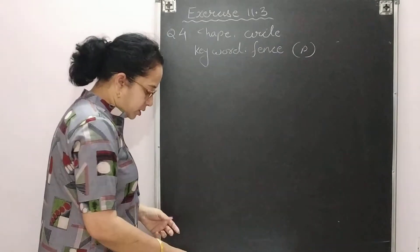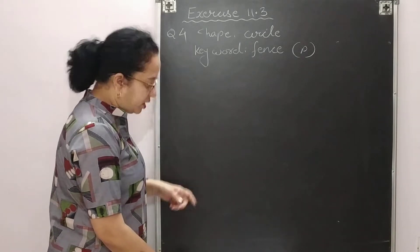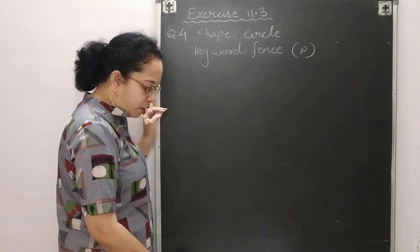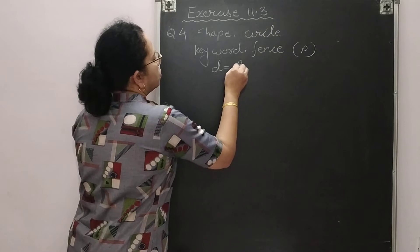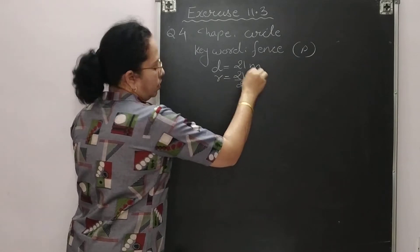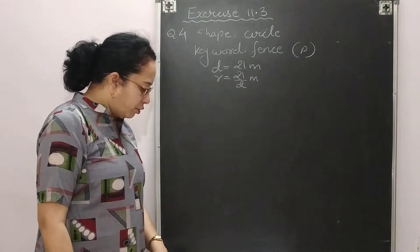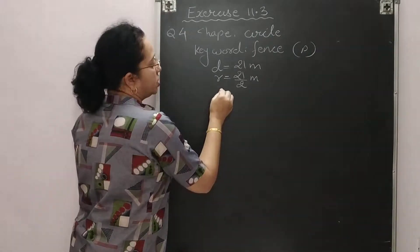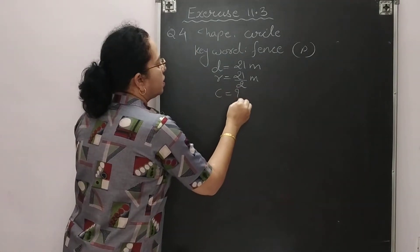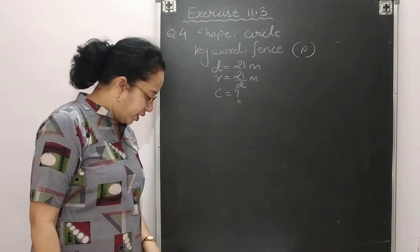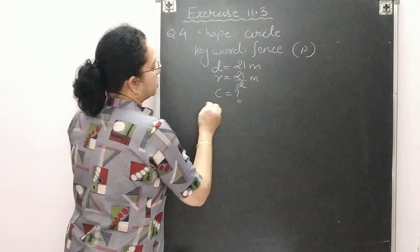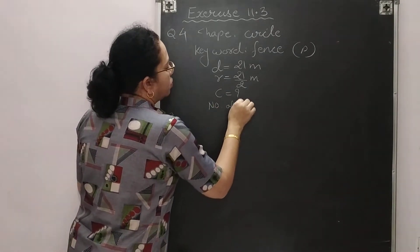The keyword 'fence' means perimeter. The circular garden has diameter 21 meter, so radius = 21/2 meter — don't cut numbers here. We need to find the length of rope, which means circumference. Additionally, he makes 2 rounds of fence, so number of rounds = 2.